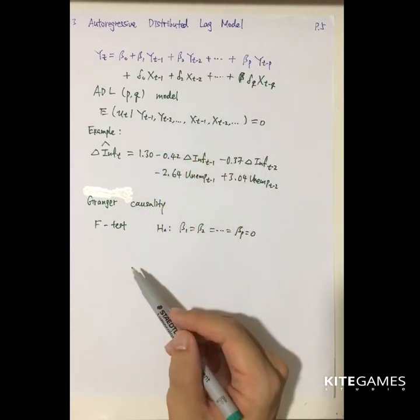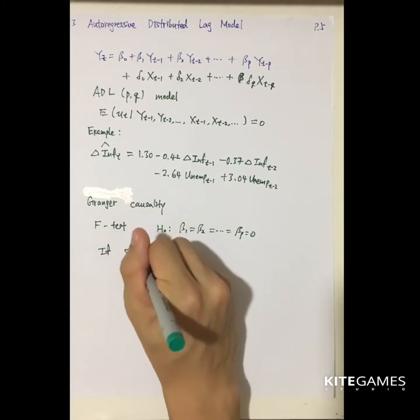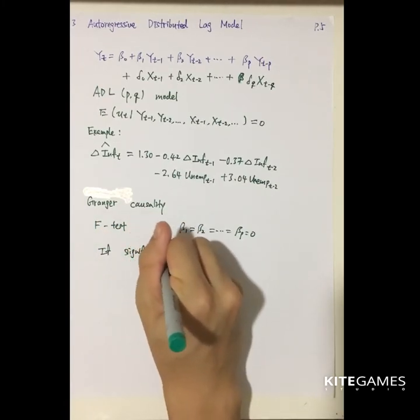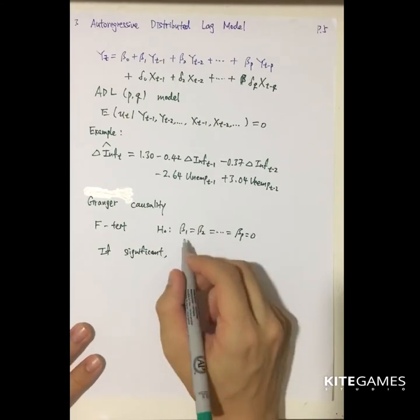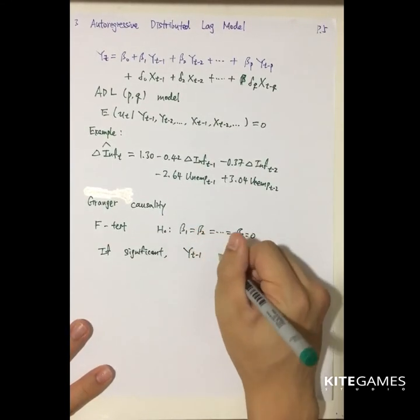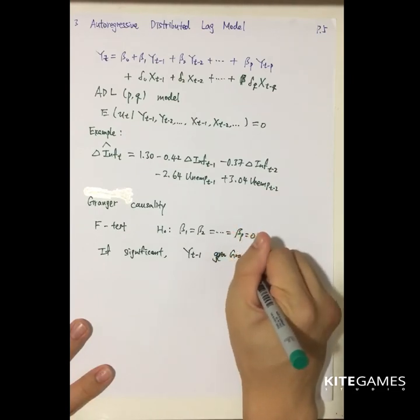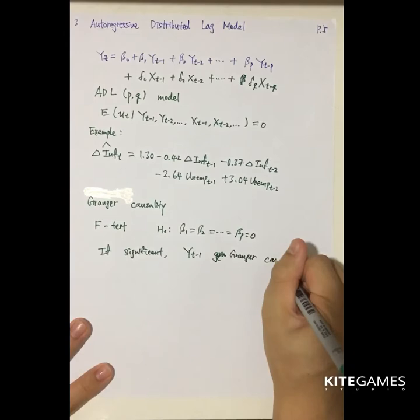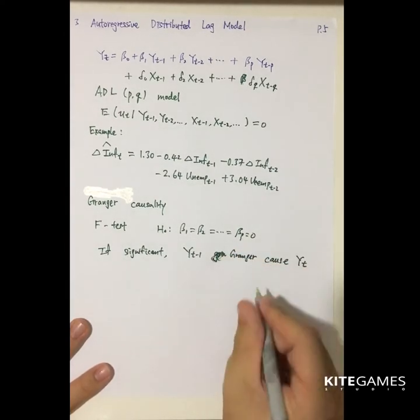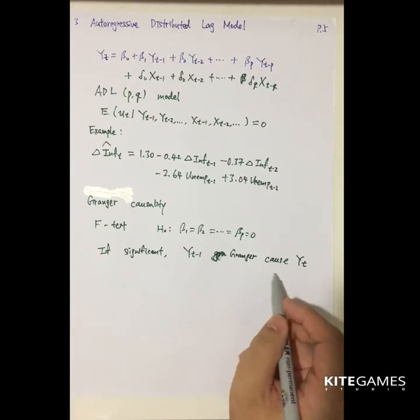So actually what Granger is doing is to test whether the coefficient of the past value is significant or not. So if it is significant, if they are statistically significant, so say beta 1 is significant, we will say that yt minus 1 will Granger Cause yt.